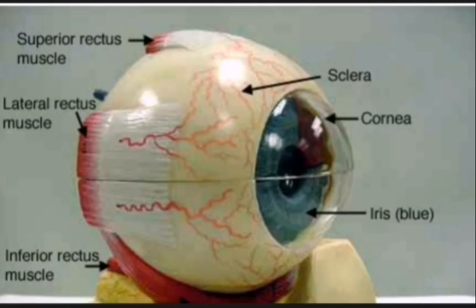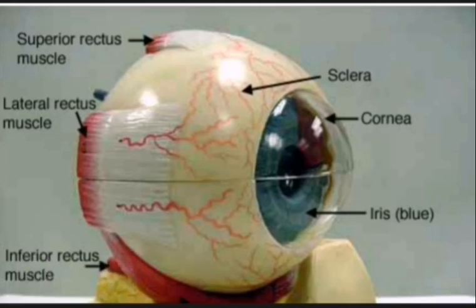The lateral rectus muscle is visible here, and below the eyeball a part is the inferior rectus muscle. Starting here is the superior rectus muscle.